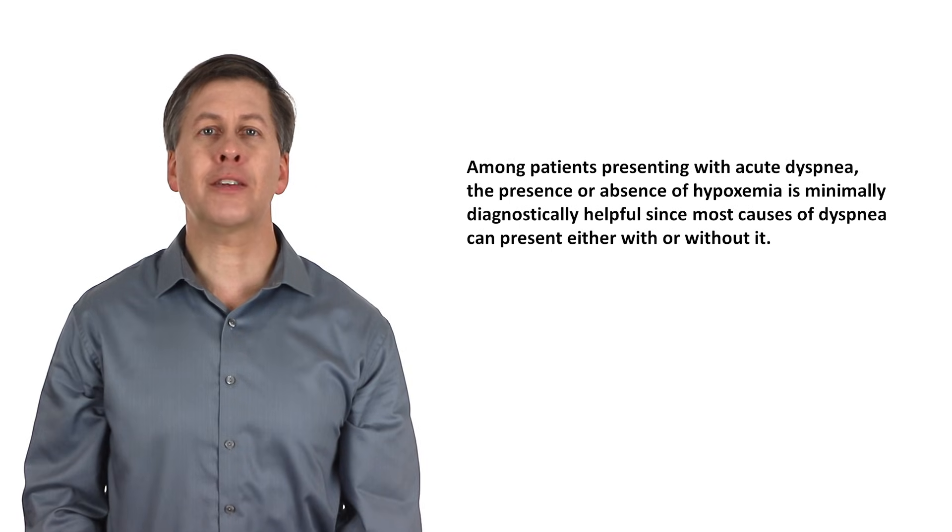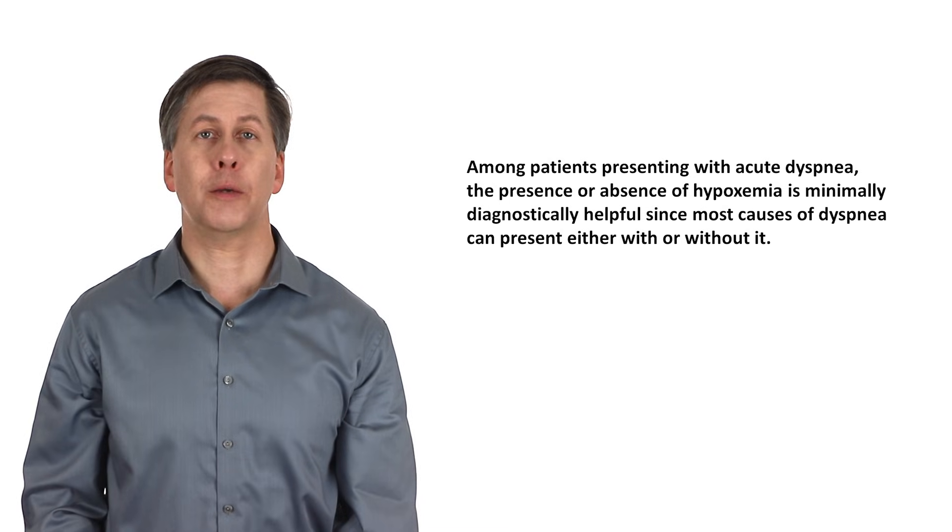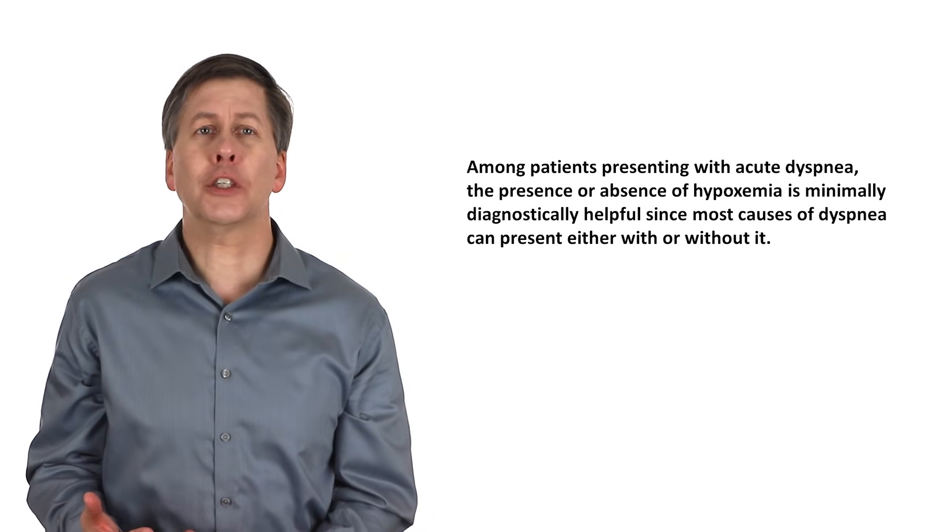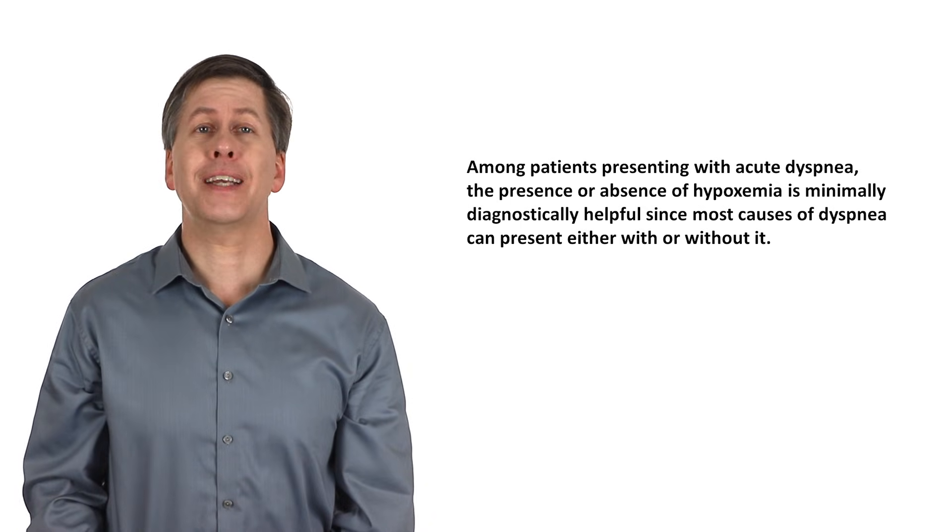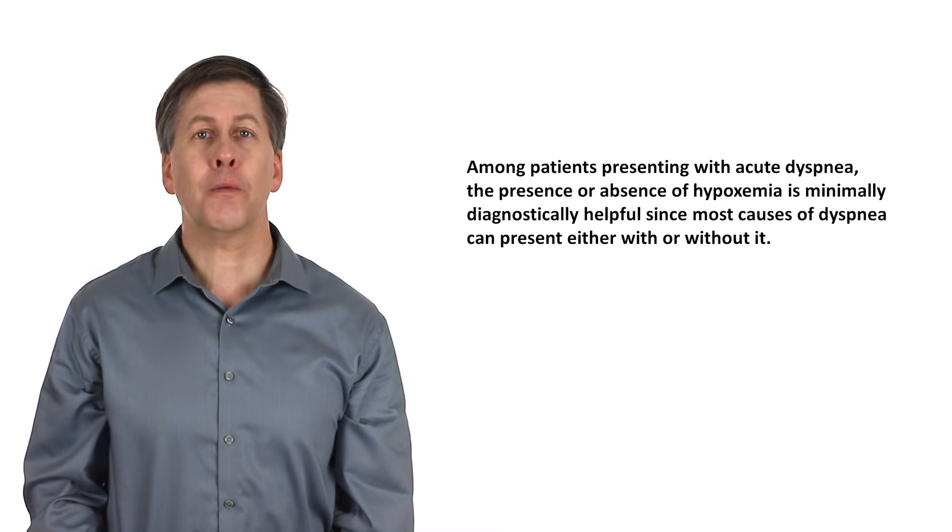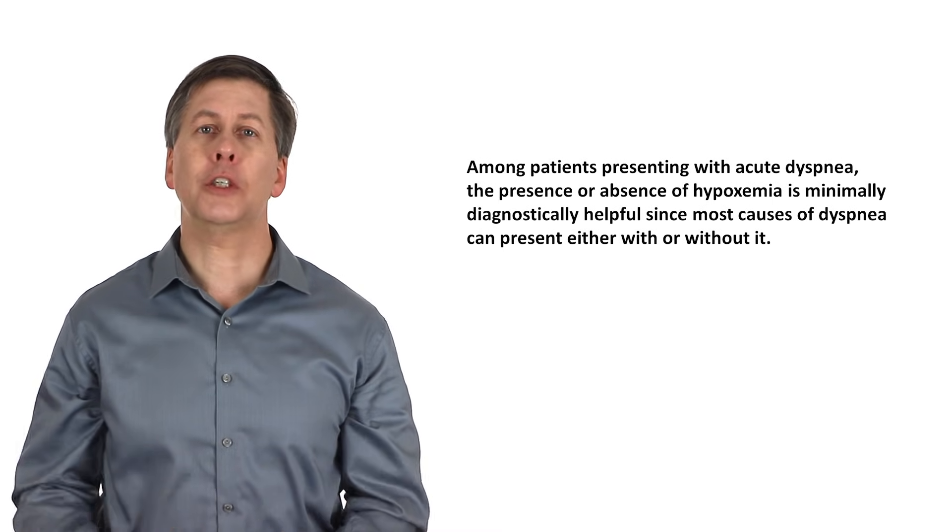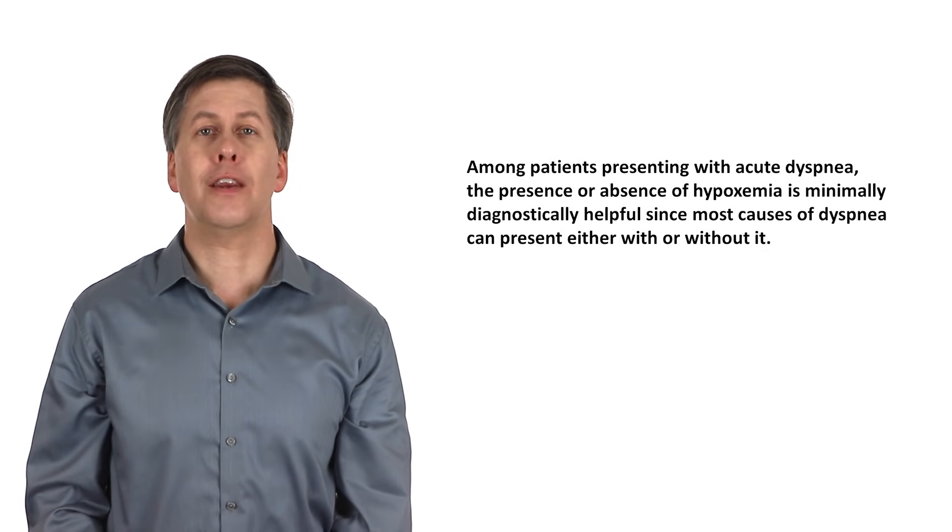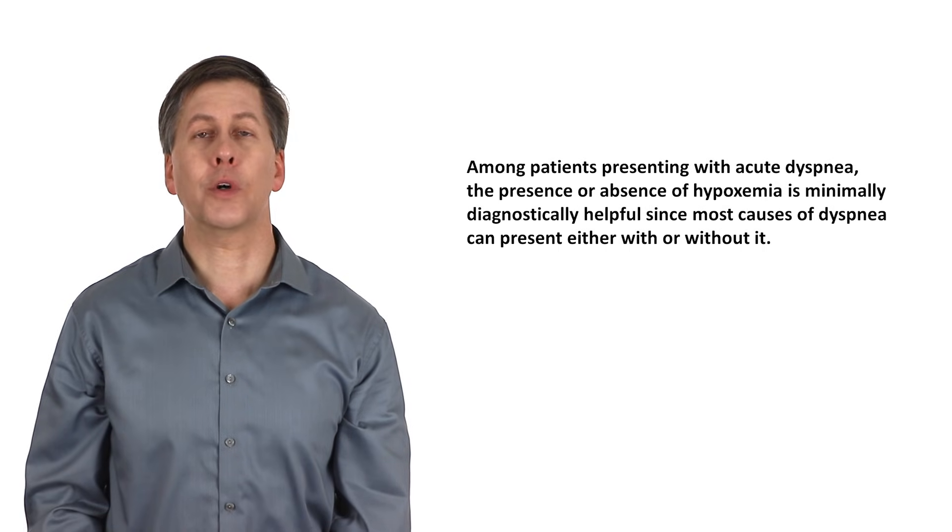You may have noticed that the presence or absence of hypoxemia is only a minor factor in our diagnostic algorithm. That may have been surprising since it was a significant part of our framework. But it turns out to be minimally diagnostically helpful since most causes of dyspnea can present either with or without hypoxemia. You should never be saying to yourself, this patient can't have such and such diagnosis because their O2-sat is normal. That is a common and dangerous fallacy. However, the opposite can be true where some diagnoses can be ruled out because they do not cause the low O2-sats that are observed. For instance, anemia, metabolic acidosis, and of course anxiety.